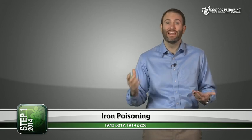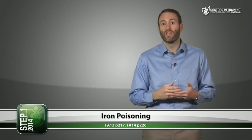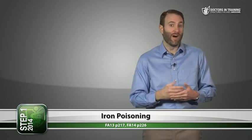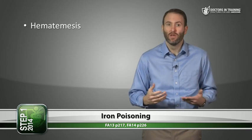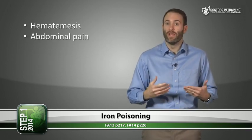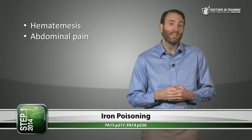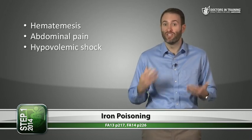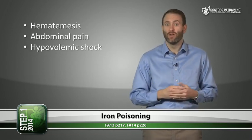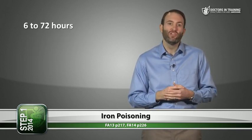Initial symptoms of iron poisoning include GI problems, specifically gastric bleeding, because iron pills settle in the stomach and damage those cells. This leads to hematemesis, abdominal pain, and potentially hypovolemic shock. The bleeding can be severe enough to cause death whether the patient vomits or the iron progresses through the GI tract.